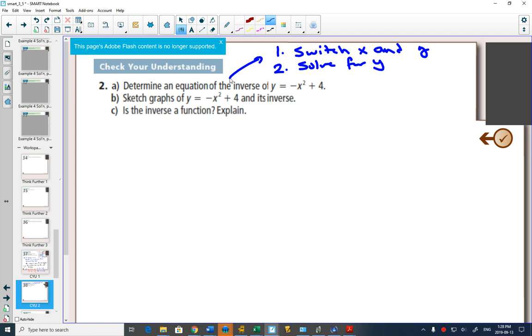And this is very much like what we were doing at the beginning when we were solving for x in the activity that we did in the last class. It's this idea. But if we switch x and y first, well, then I get x equals negative y squared plus 4.